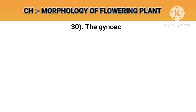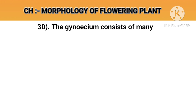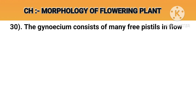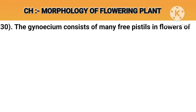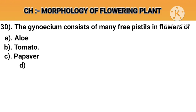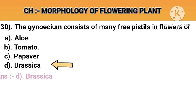Question number 30. The gynoecium consists of many free pistils in flowers of. Option A: Aloe. Option B: Tomato. Option C: Papaver. Option D: Brassica. Answer D: Brassica.